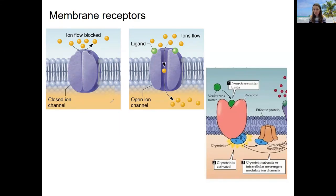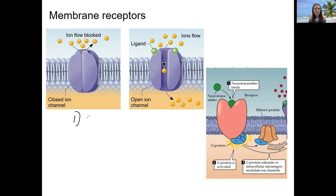There are two types of membrane receptors, and these both exist in all those different types of communication. We'll see these two types in more detail, especially when we get to the nervous system. The first type — you can maybe tell from what this looks like — is a ligand-gated ion channel.